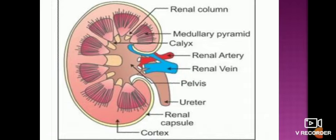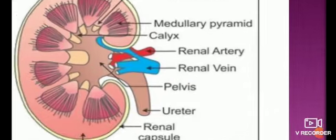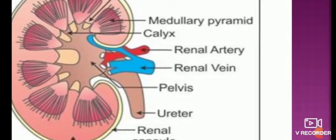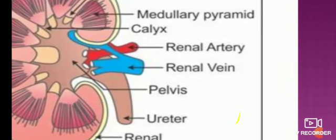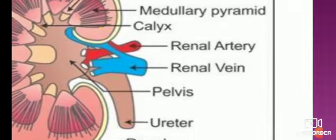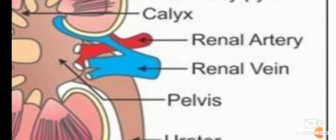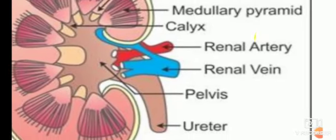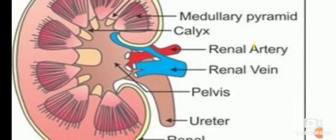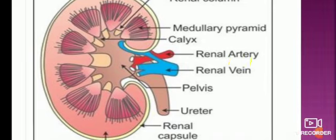Blood enters the kidney through the renal artery, and deoxygenated blood exits through the renal vein. The pelvis is a funnel-shaped structure in the central area of the kidney that collects urine drop by drop, which then moves toward the urinary bladder through the ureter.